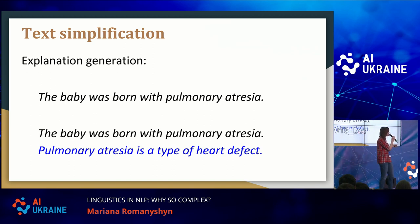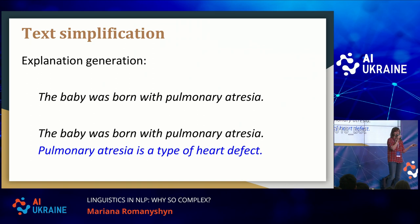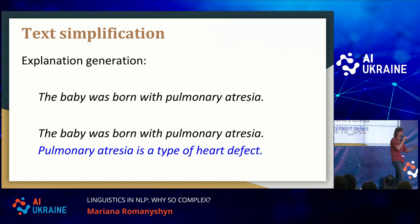You can also do explanation generation. Say you have the text "The baby was born with pulmonary atresia." How many people in the room know what pulmonary atresia is? Probably none, because we are non-specialists. But if you have a text simplification system that can generate an explanation saying "pulmonary atresia is a type of heart defect," this text becomes much more understandable for you and me.